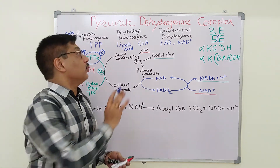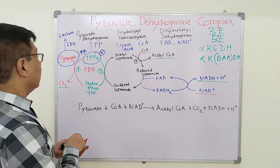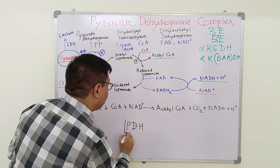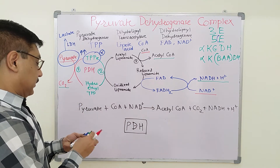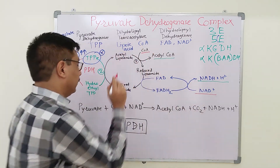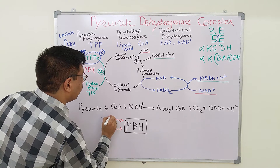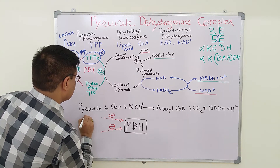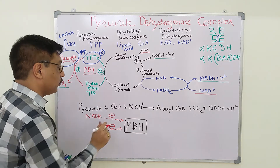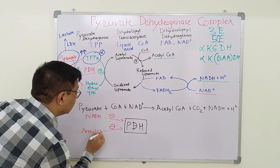Coming to regulation of the pyruvate dehydrogenase complex: it is regulated at the level of pyruvate dehydrogenase. This pyruvate dehydrogenase is inhibited by its products — NADH and acetyl-CoA. Whenever there is a high quantity of acetyl-CoA or a high quantity of NADH, NADH will inhibit pyruvate dehydrogenase, the first enzyme of this multi-enzyme complex. Similarly, acetyl-CoA will inhibit this pyruvate dehydrogenase complex.